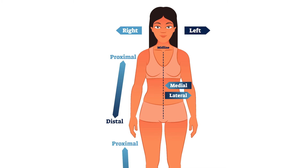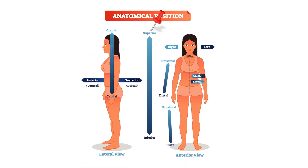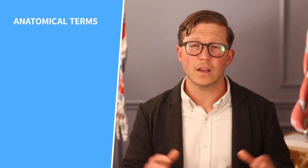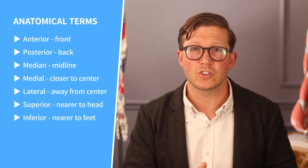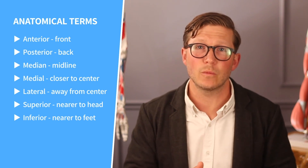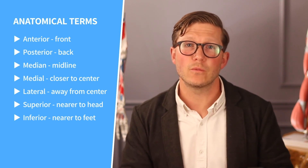These terms will become very familiar as you progress through the thorax sections. Superior refers to upwards or towards the head — for example, the heart is superior to the stomach. The opposite is inferior, referring to a structure downwards or towards the feet, also known as sub. So the stomach is inferior to the heart. To review: anterior and posterior mean front and back; median denotes the midline while medial means closer to the center and lateral means away from the center; and superior means nearer to the head while inferior means nearer to the feet.